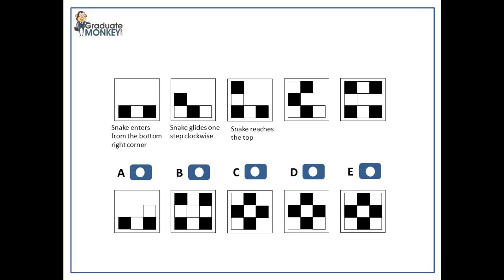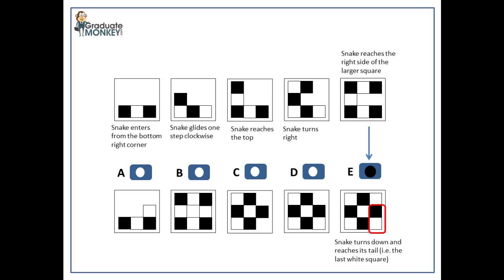Because in the fifth pattern, the snake reaches the right side of the larger square, the next move should be down. Remember, the snake's head is the first black square. So when it moves down, its head will be in the middle of the right side of the square. The final white square that entered from the bottom-right corner would be the tail of the snake. In other words, the head of the snake reaches its tail. Therefore the correct answer must be E.